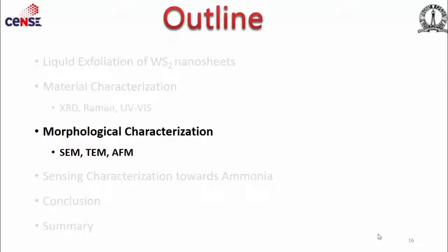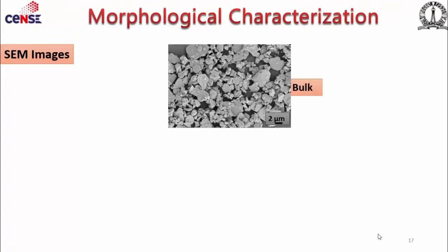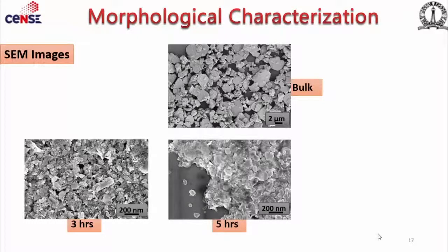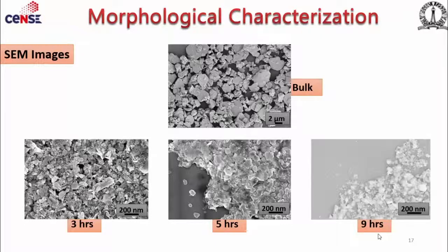Looking at the morphology through SEM: bulk nanosheets are very large — varying from 5 to 10 micrometers. After exfoliation, we go down to lateral dimensions of around 300 to 500 nanometers. For three and five hour samples, the size is almost similar. But at nine hours, we observed agglomeration of nanoparticles and nanosheets — the longer sonication breaks things more randomly, causing agglomeration where active sites get hidden.